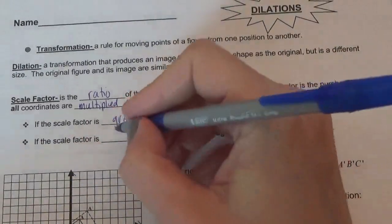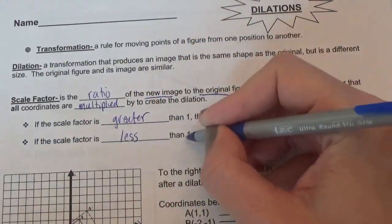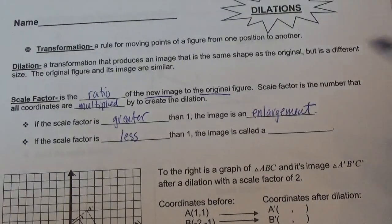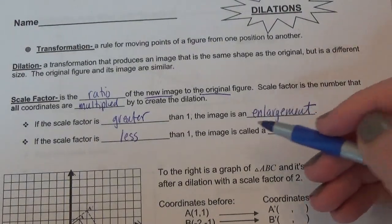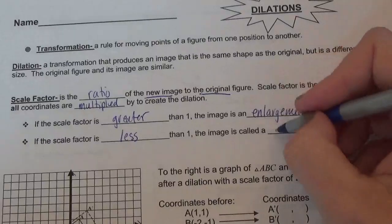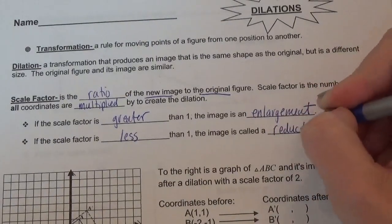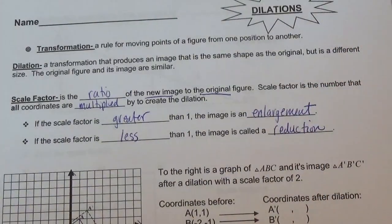Now if the scale factor is less than 1, so a fraction or decimal, that's going to make the image get smaller. That's called a reduction.